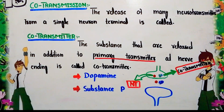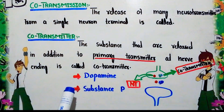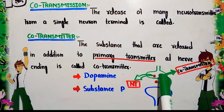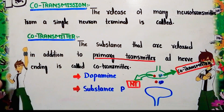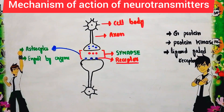An example of a co-transmitter: dopamine is a co-transmitter of serotonin, where serotonin is the primary neurotransmitter. Another example is Substance P, which is a co-transmitter released along with acetylcholine. This is the concept of co-transmission.